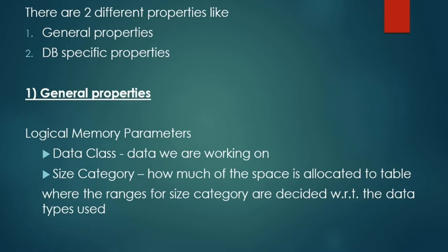We'll see everything in detail now. Let's start with the general property and the logical memory parameter which has data class describing what kind of data we are working on, and the size category which describes how much of the space is allocated to the table. The ranges for the size category are decided with respect to the data types used.